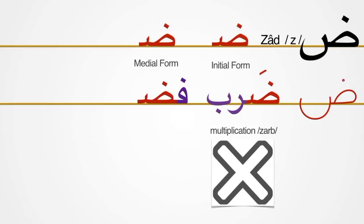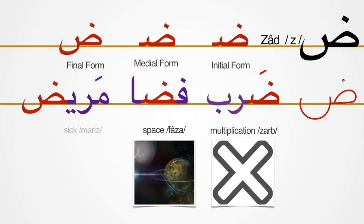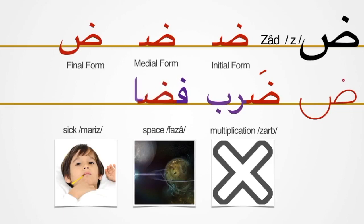فضا، مریض، زاد، ضرب، فضا، مریض. (Faza, mariz, zad, zarb — meaning: space, sick, provision, strike.)